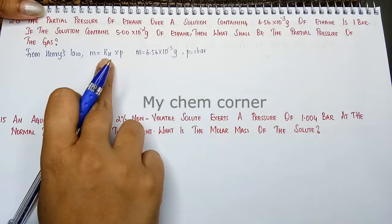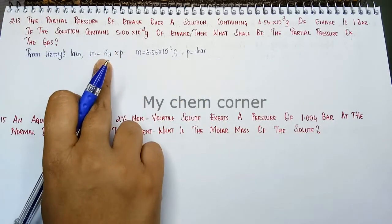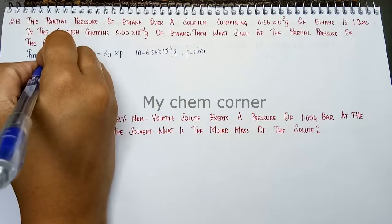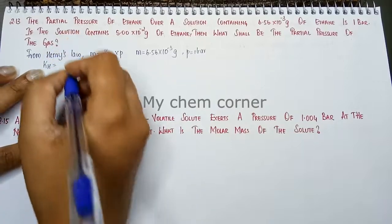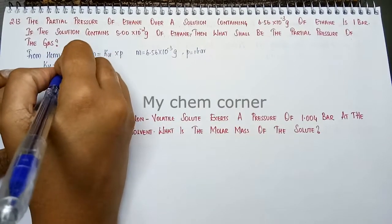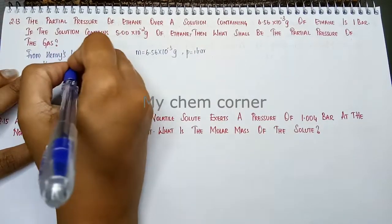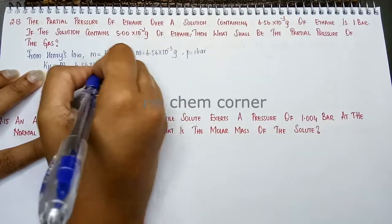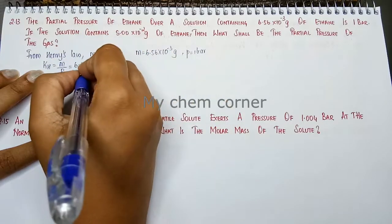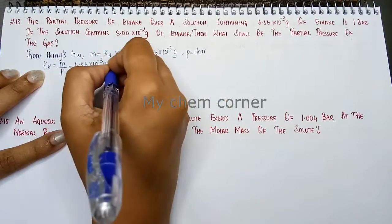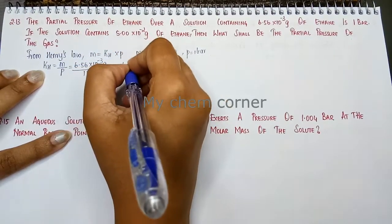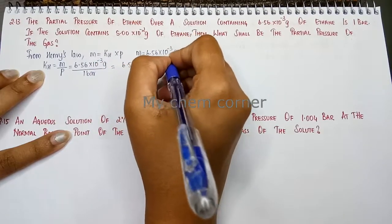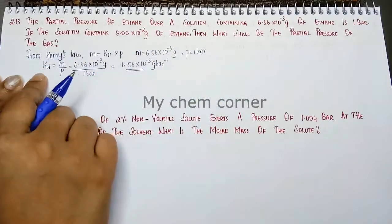So now, mass is given, pressure is given, we can calculate what is the Henry's constant in the first situation. Henry's constant is equal to mass by pressure. Mass is 6.56 × 10⁻³ grams by pressure 1 bar. When you convert this, it is 6.56 × 10⁻³ gram per bar. That's going to be the Henry's constant.